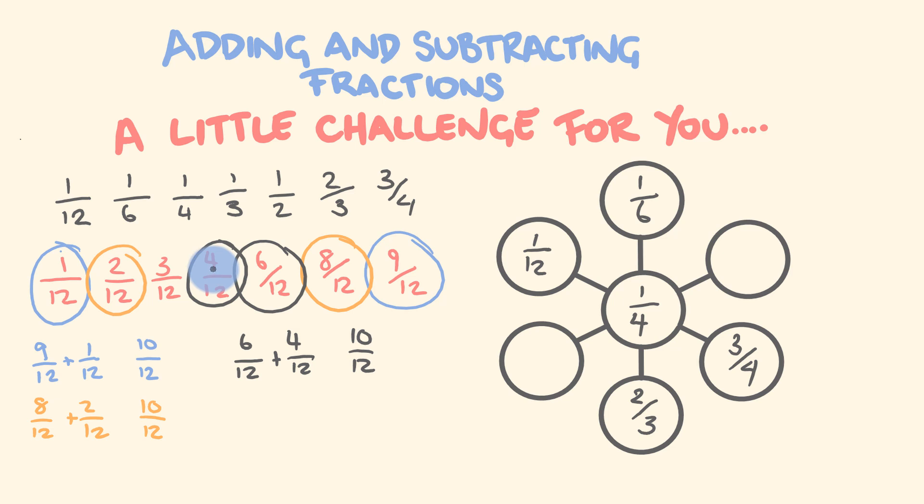For our last row, we have the one that is equivalent to 4 over 12, which is 1 third, and the one which is equivalent to 6 over 12, which is 1 half.